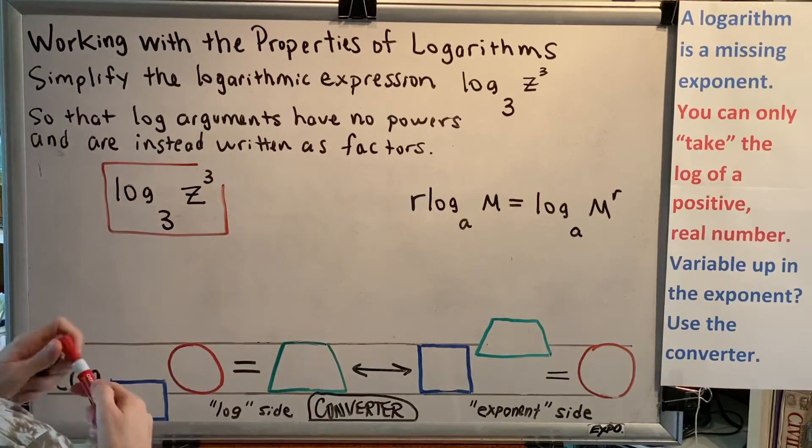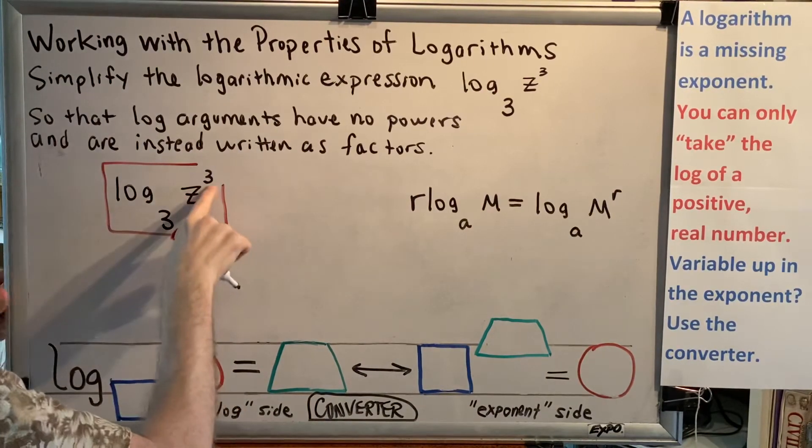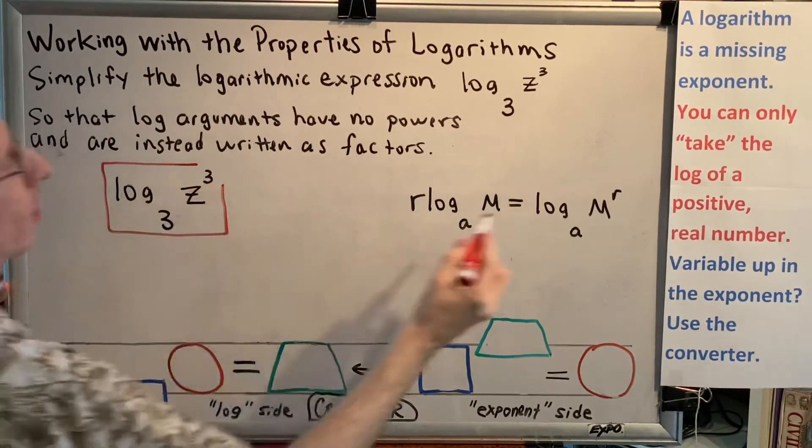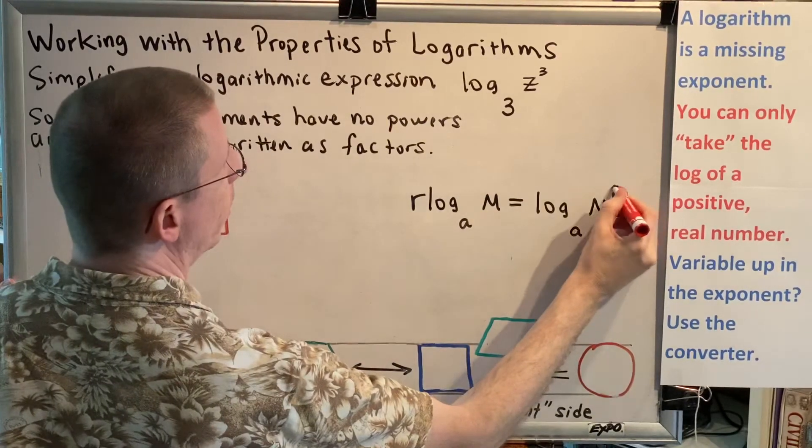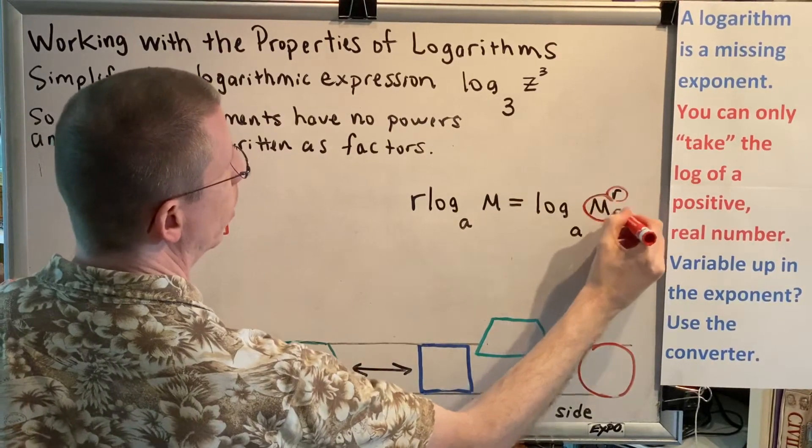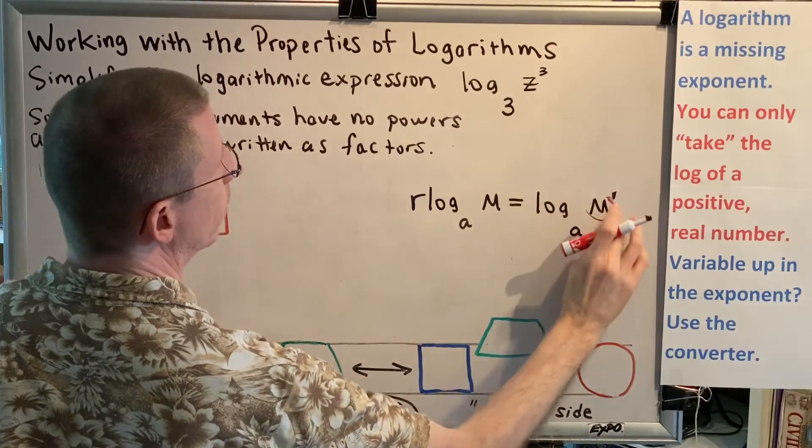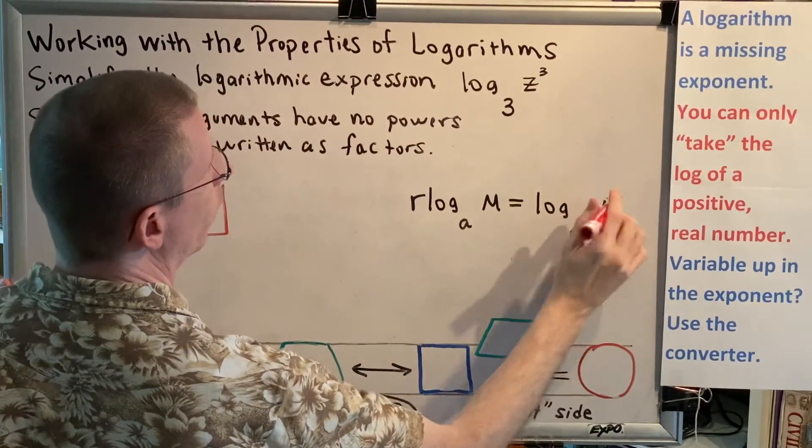Notice that this 3 in the exponent of the argument matches the r in the exponent of the argument. And our job is to move it so that it moves to the front of the log.